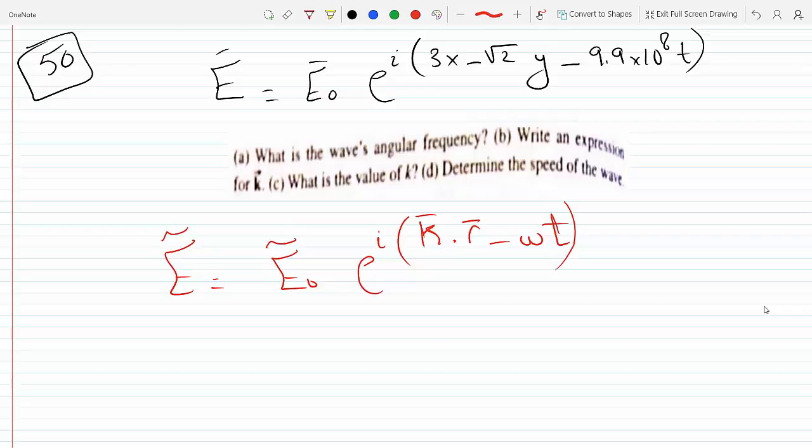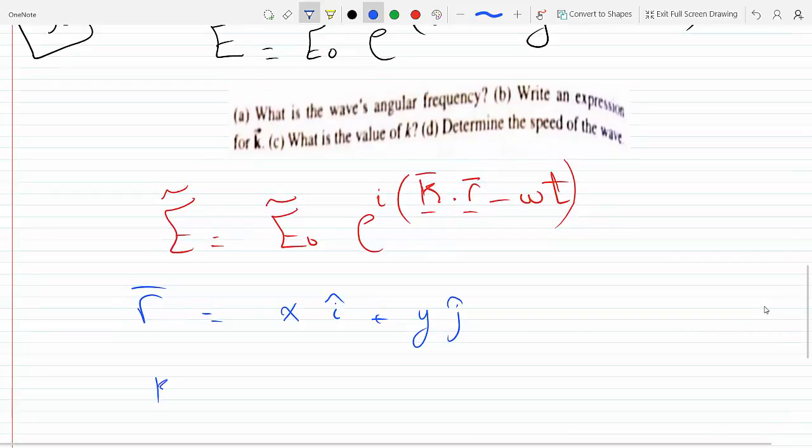That's the general form of the electric field. E₀ is the amplitude. Now this is the dot product between two vectors, so R is some point in space, whatever the coordinates are: X i plus Y j and K.